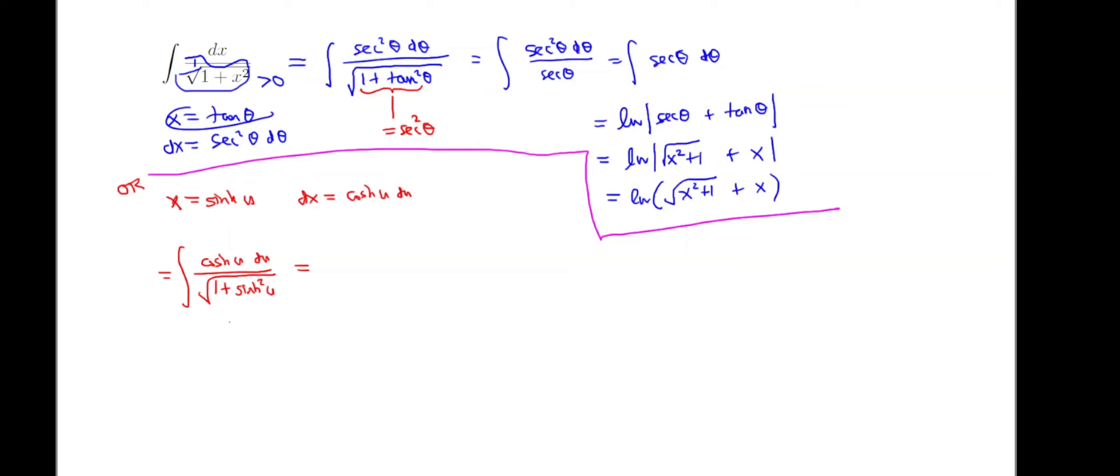Now, once again, you may recall from, if you know a little bit about hyperbolic functions, or if you've watched my first video on hyperbolic functions, that 1 plus sinh squared u is the same thing as cosh squared u. So when we take the square root of cosh squared, we get cosh. So very nicely, we have a cosh cancelling with a cosh, and we just get the integral of du, which is equal to u. Then we want to put this back in terms of our original variable. So if x equals sinh u, that means u is going to equal inverse sinh of x, plus a constant.